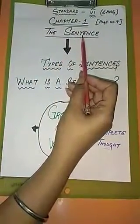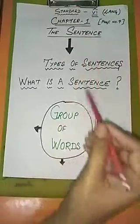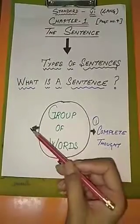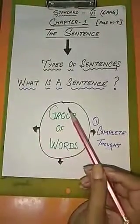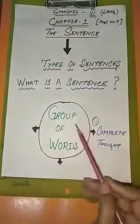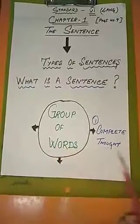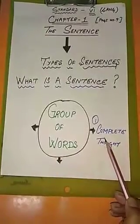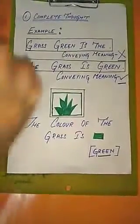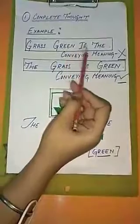The sentence. What exactly is a sentence? A sentence is a group of words and it has three important characteristics. It expresses a complete thought or an idea. For example, this is a group of words: grass green is the.